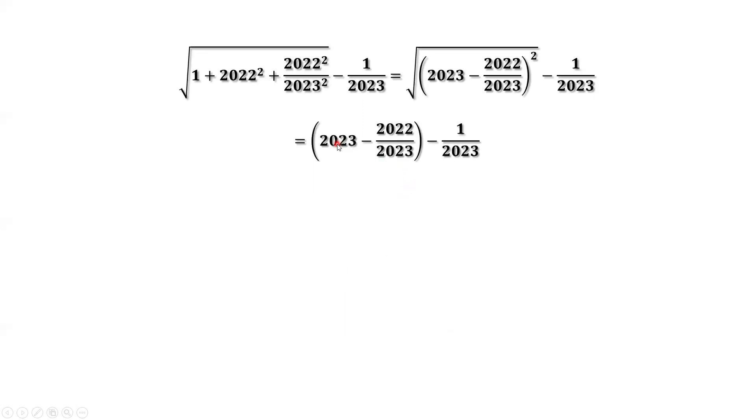Because the first term is bigger than the second term. When we cancel the square root and the square, we have to be very careful. This part must be bigger than or equal to zero. Otherwise, we have to put a negative sign in front if this is a negative. Here, our case is positive. So we don't have to put a negative sign in front. Continue to simplify.